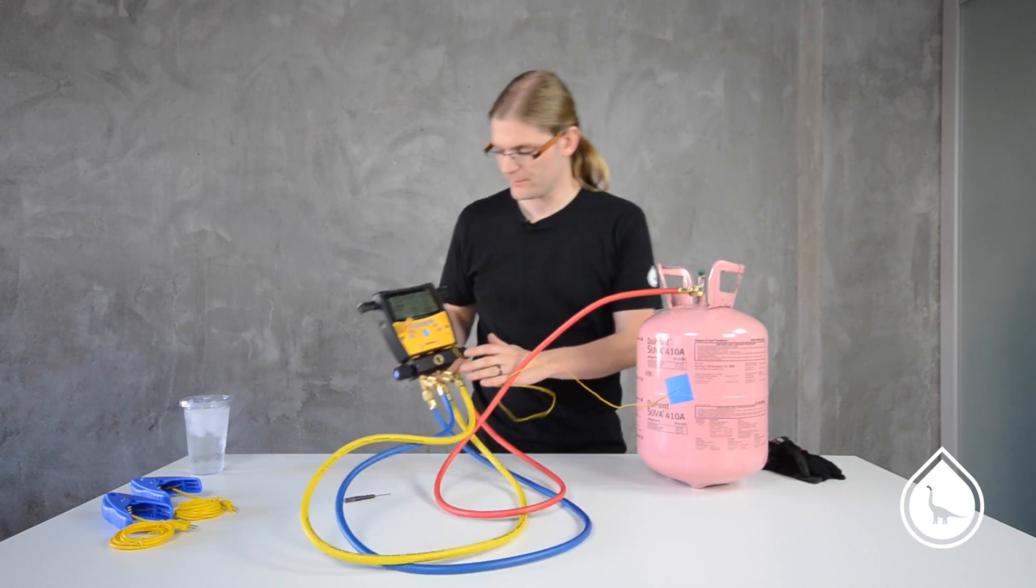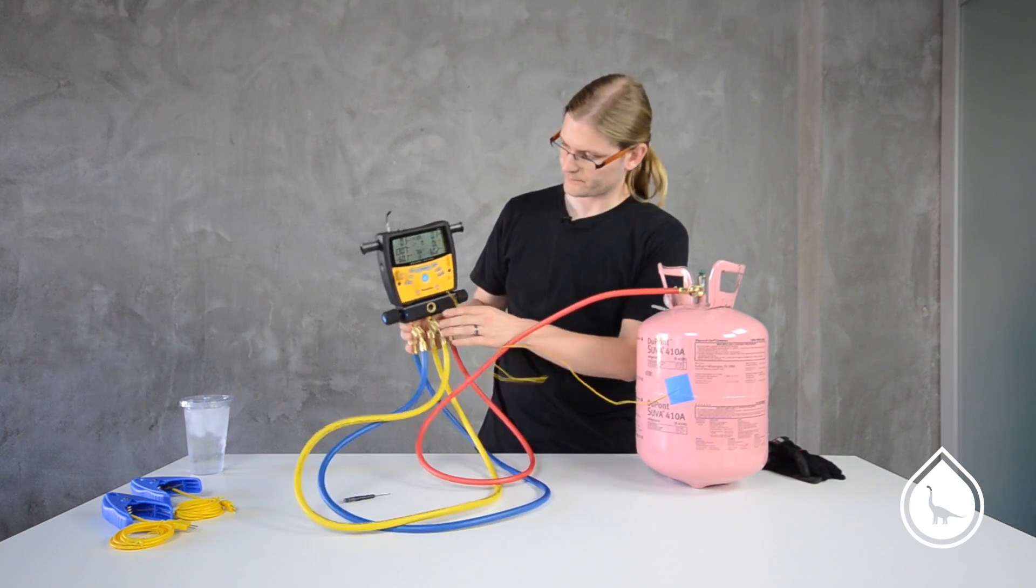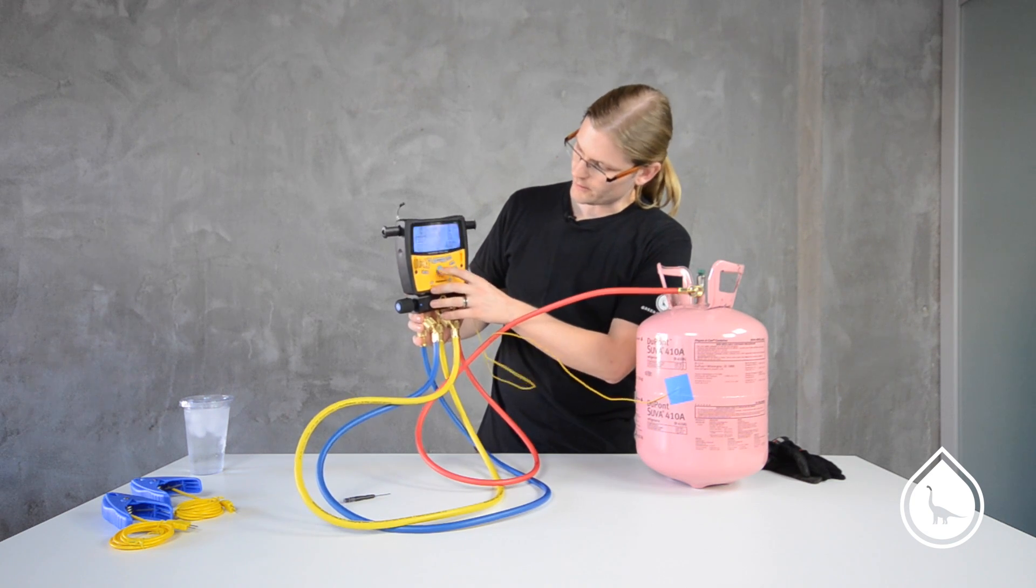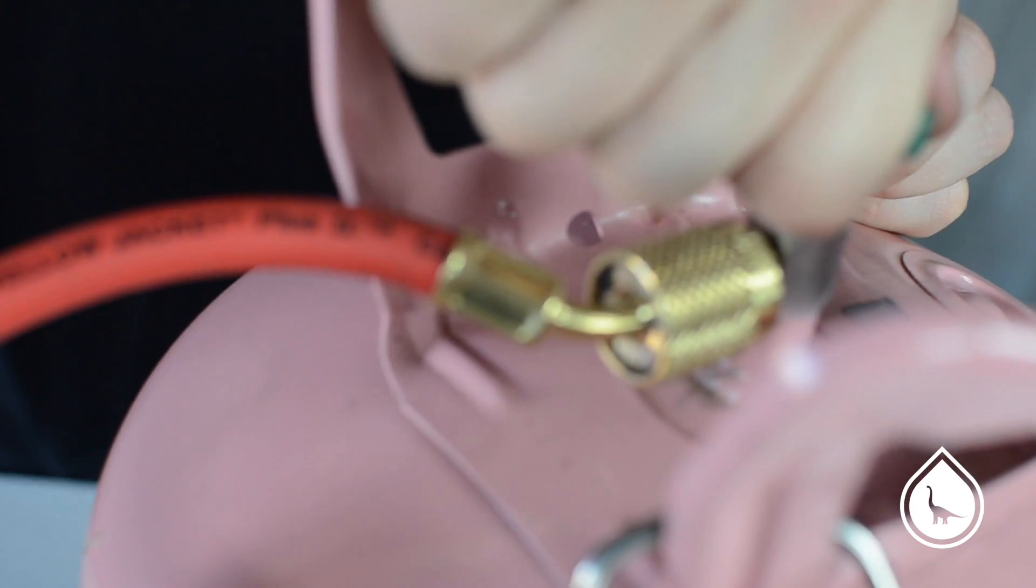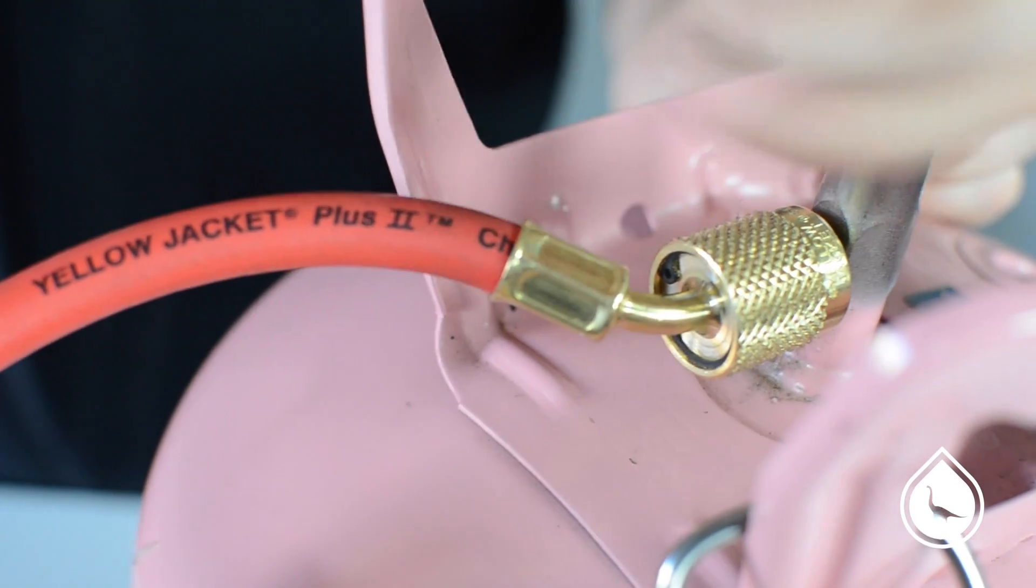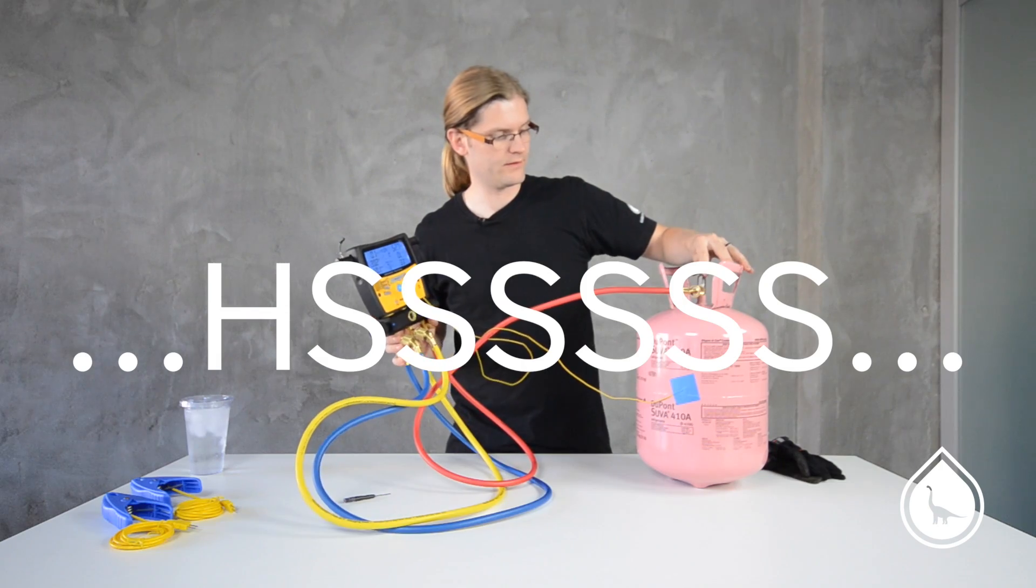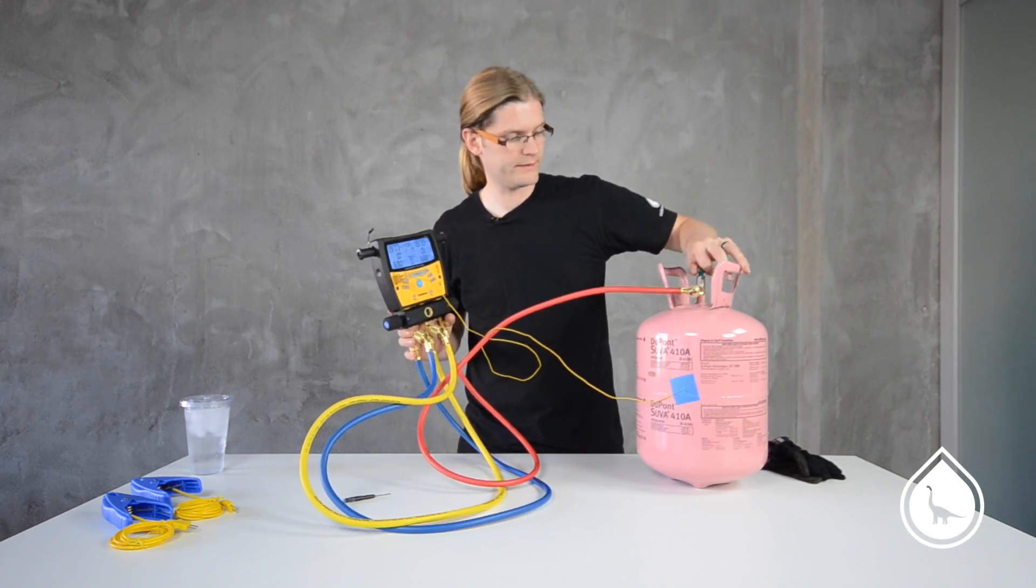All right, with the gauge set up and all plugged in, we are also set to R410A, which is the refrigerant we're using. I'm going to open up the canister and allow it to fill our line set.